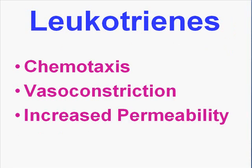For leukotrienes in acute inflammation, the most important factors are: they are involved in chemotaxis — the attraction of neutrophils to sites of injury after they leave blood vessels. They are also involved in vasoconstriction. And they are involved in increased permeability — so with leukotrienes you have vasoconstriction and increased permeability together. The third class of arachidonic acid derivatives is lipoxins.